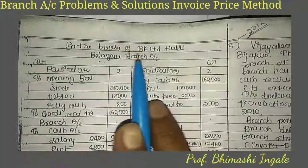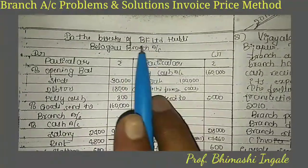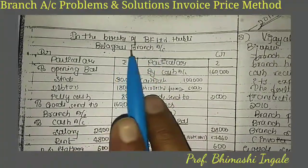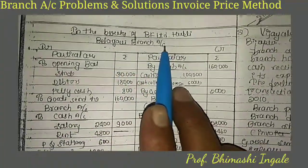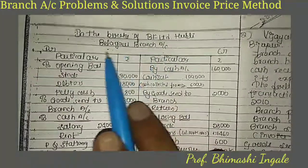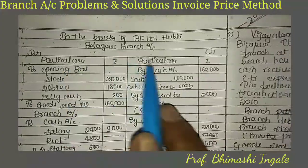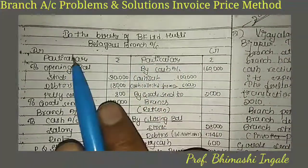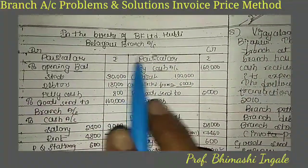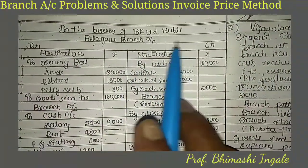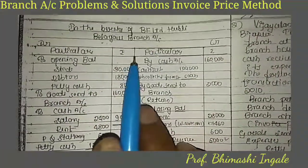In the books of BK Limited, we prepare the branch account with debit and credit sides, showing particulars and rupees amounts on each side.